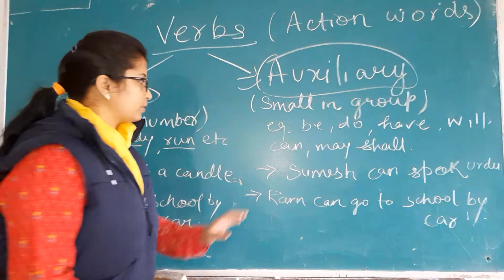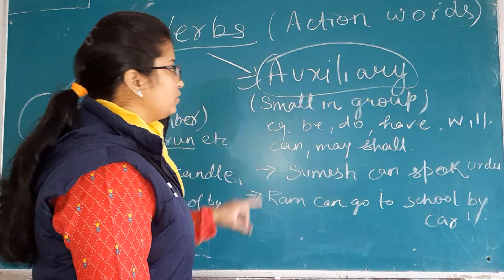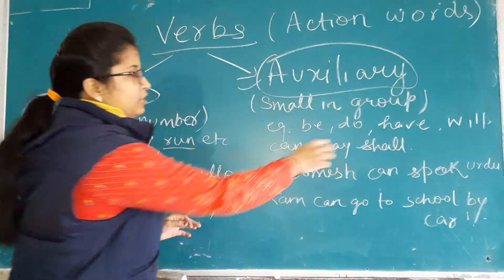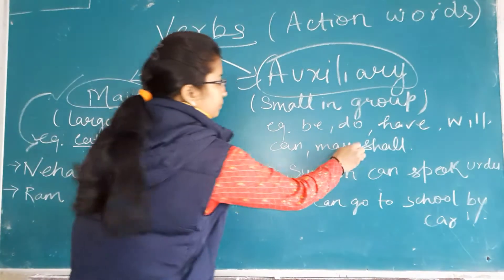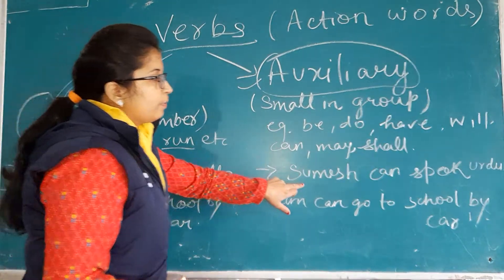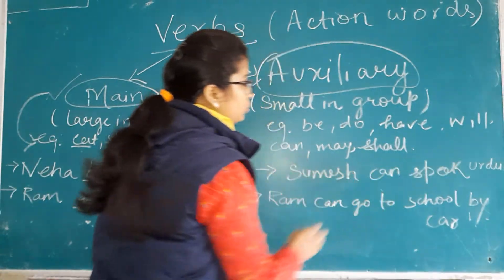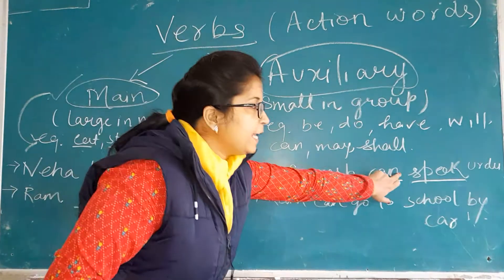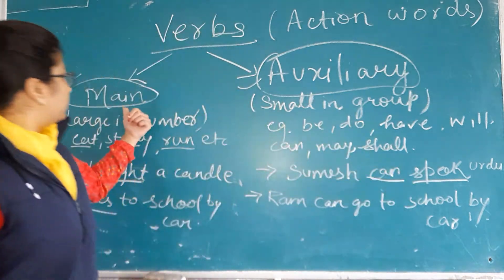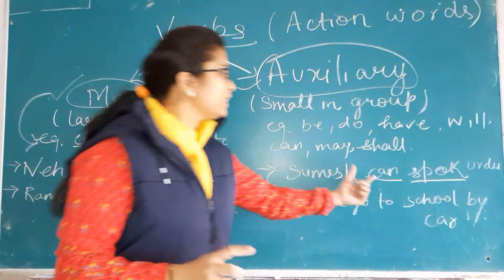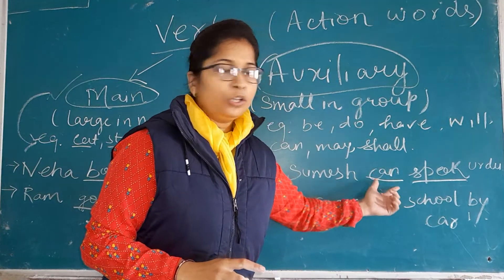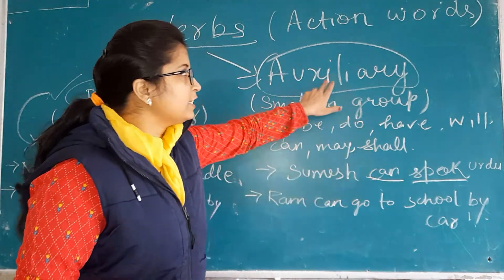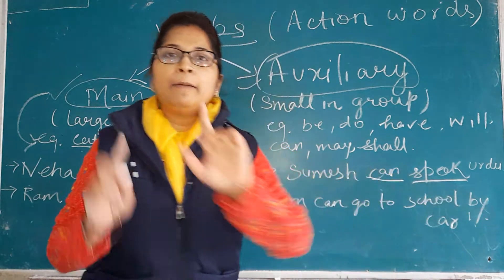Now, on to auxiliary verbs. Auxiliary verbs are those verbs that are used alongside words like do, have, will, can. For example, 'Suresh can speak Urdu.' Here, 'speak' only is our main verb. But when you use 'can', what is the auxiliary verb? Can is auxiliary and speak is main verb.